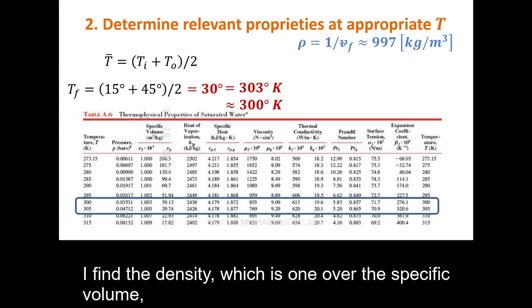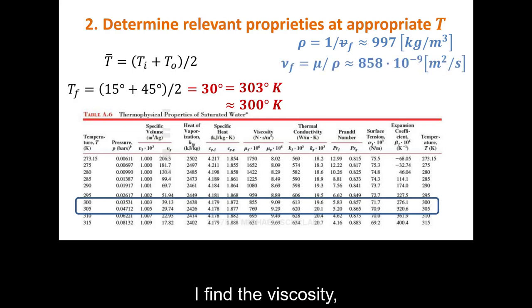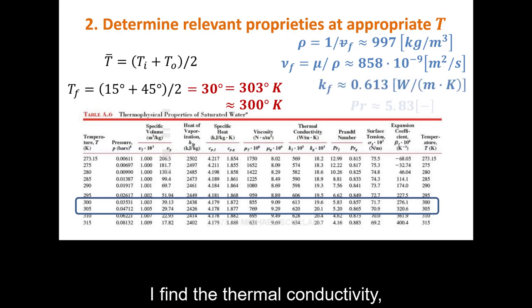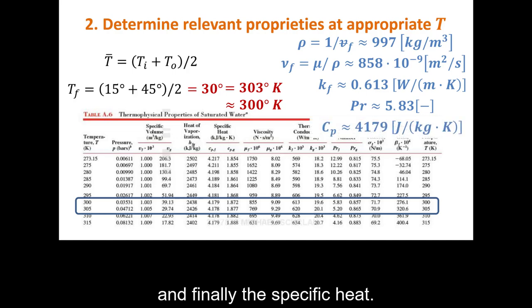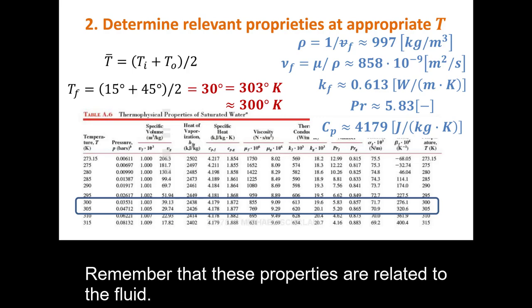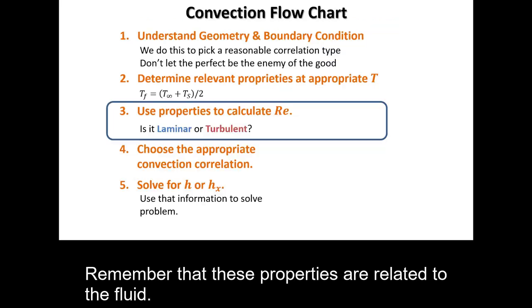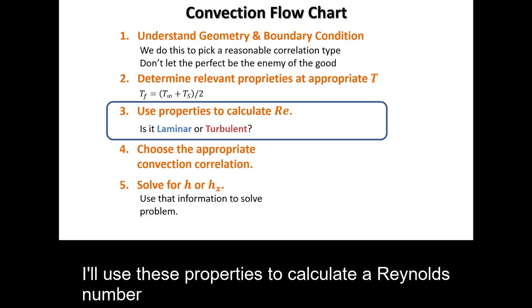At 300 K, I find the density (as one over the specific volume), the viscosity, the thermal conductivity, the Prandtl number, and the specific heat. These are all fluid properties that I'll use to calculate the Reynolds number.